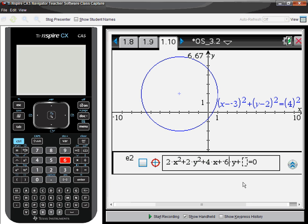So here I'm going to put in a negative 6y and then a negative 18. Graph that.